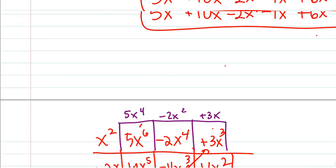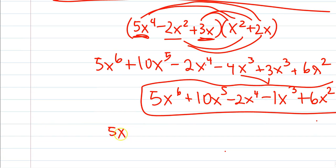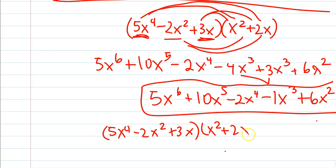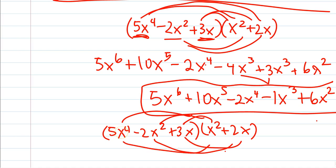Someone wanted to distribute the second group back onto the first instead. That's OK — you can multiply in any order, so you can distribute the first group forward or the second group back. If that's intimidating, don't do it, but it should give you the same answer: 5x to the sixth, 2x to the fourth, 3x to the third, and so on — it all turns into the same thing. Good job, we have one more section.